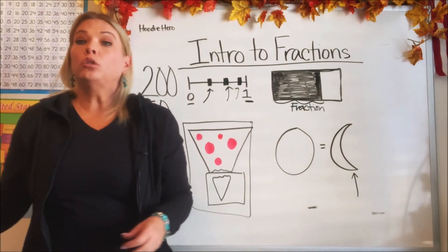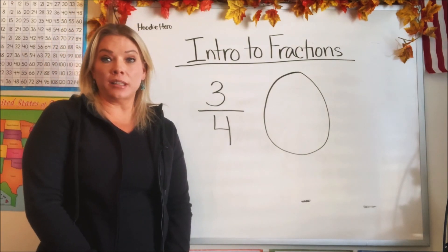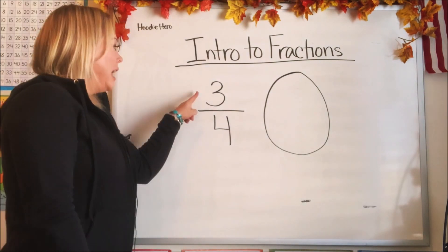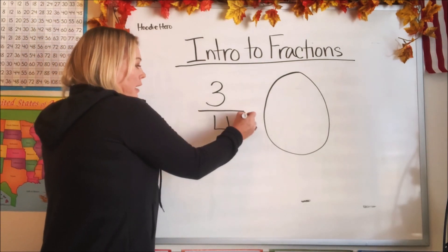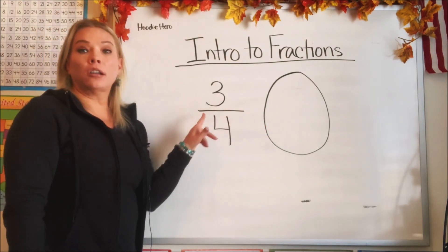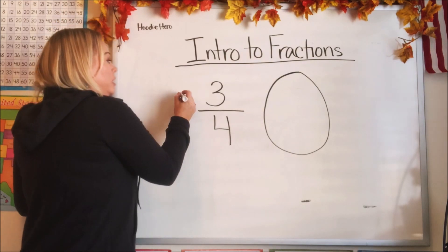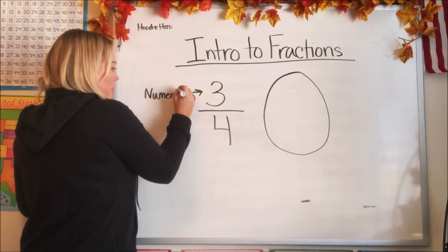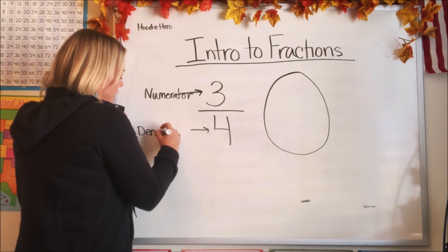Now let's move on to learning what the two numbers in a fraction mean. Hopefully you now understand what a fraction is, so let's find out what the numbers mean when we see a fraction. A fraction is divided by a line called the vinculum — you probably don't need to remember that — it just means horizontal line. There's a top number and a bottom number, and they have appropriate names. The top number is called the numerator, and the bottom number is called the denominator.